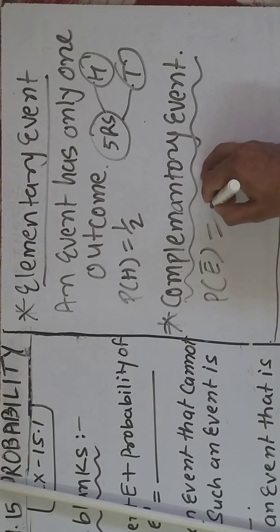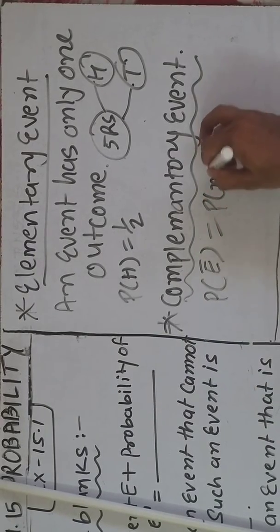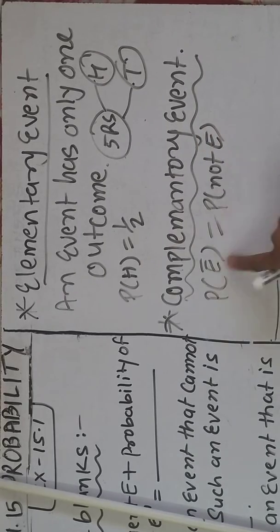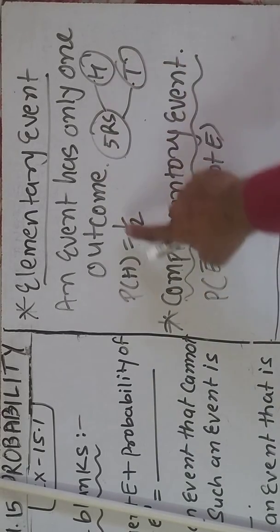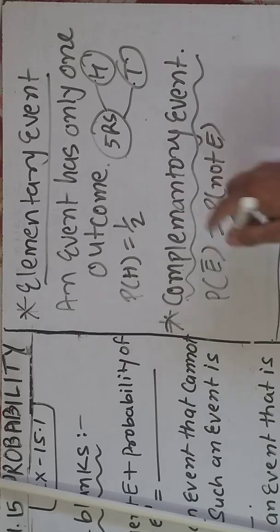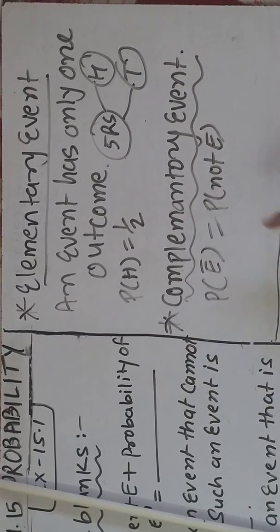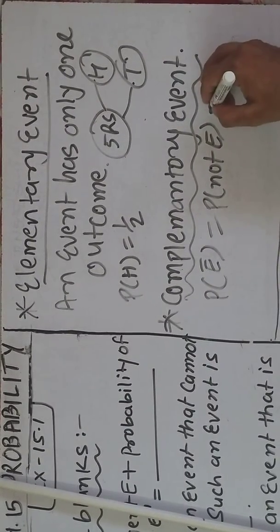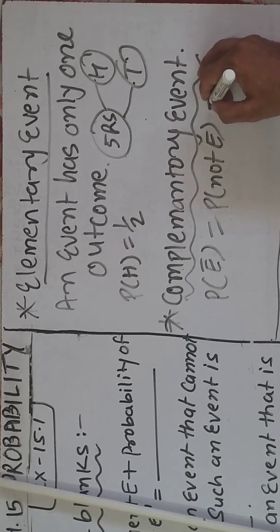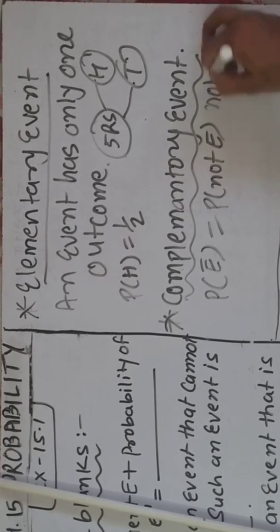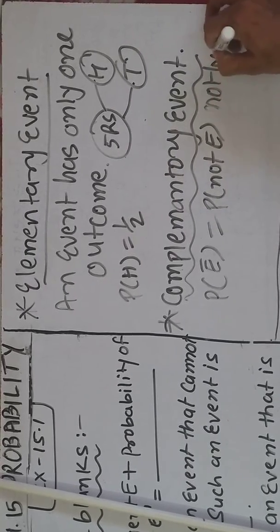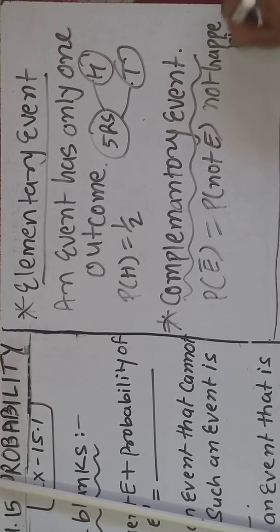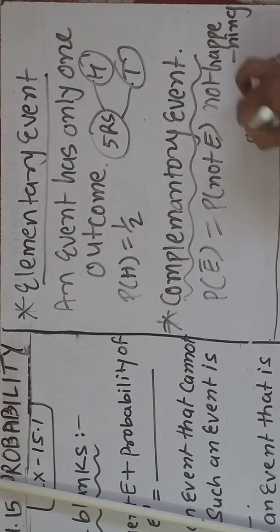Complementary event ka matlab hai probability of not happening of an event — that is 'not E'. Jaise head aane ki probability 1 by 2 hai, toh head na aane ki probability kya hogi? Use bolte hain complementary event. Matlab, not happening of any event.